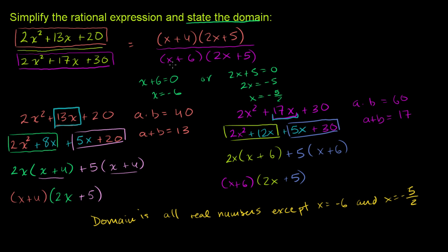Now let's just simplify the rational expression. We've already said that x cannot be equal to negative 5 halves or negative 6. So let's just divide the numerator and the denominator by 2x plus 5. We know that 2x plus 5 won't be 0, because x won't be equal to negative 5 halves. So we can cancel those out, and the simplified rational expression is just x plus 4 over x plus 6.